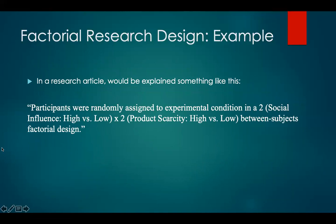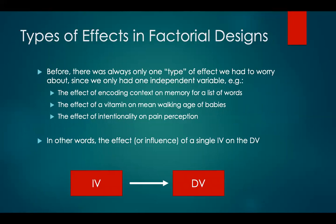In a research article, this would be described something like: participants were randomly assigned to experimental condition in a two (social influence: high versus low) by two (product scarcity: high versus low) between-subjects factorial design. Previously, with only one independent variable, we only had one type of effect to worry about — for example, the effect of encoding context on memory, the effect of a vitamin on mean walking age of babies, or the effect of intentionality on pain perception. In other words, the effect of a single independent variable on a single dependent variable.